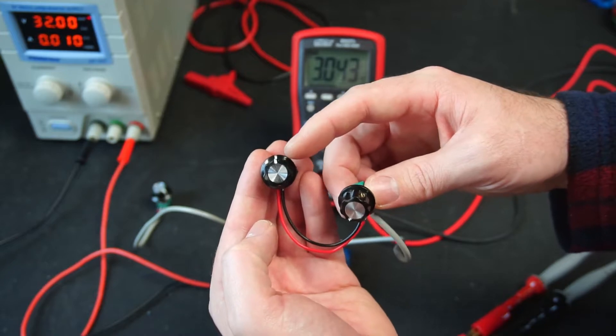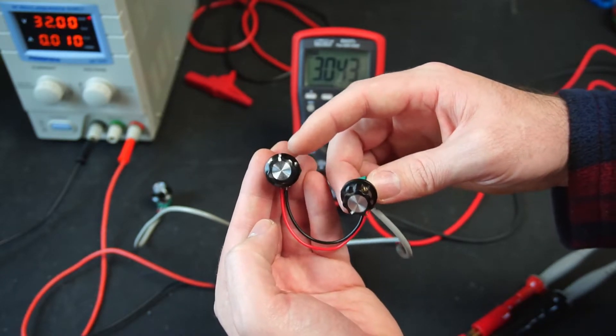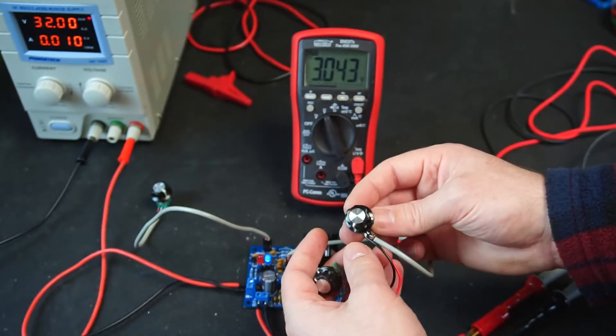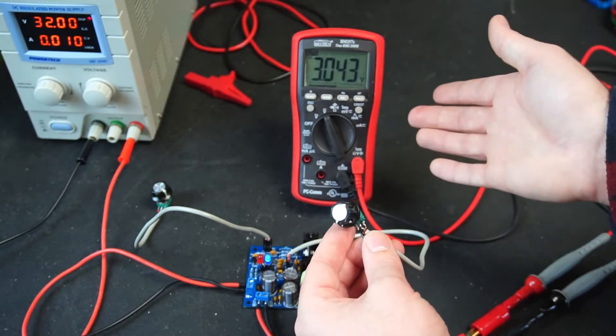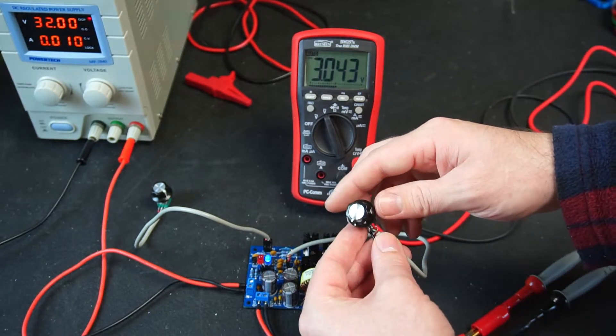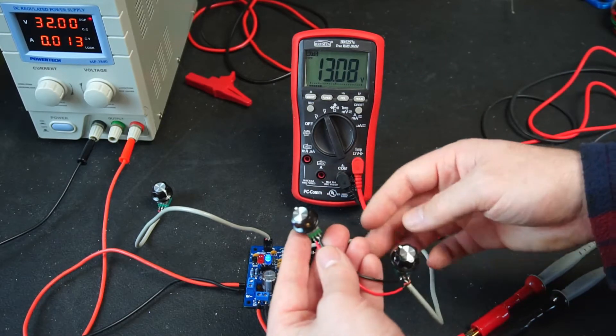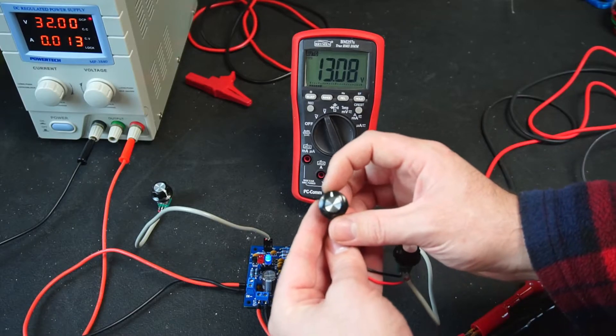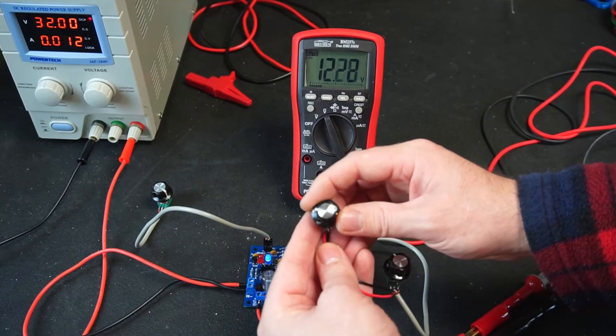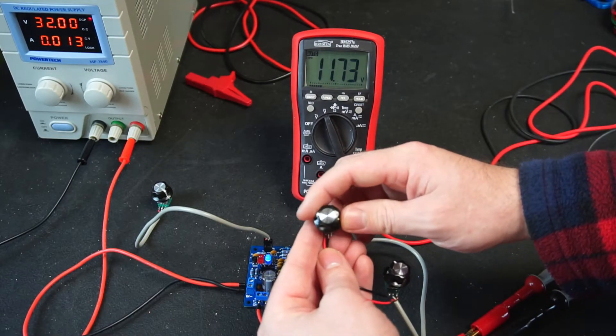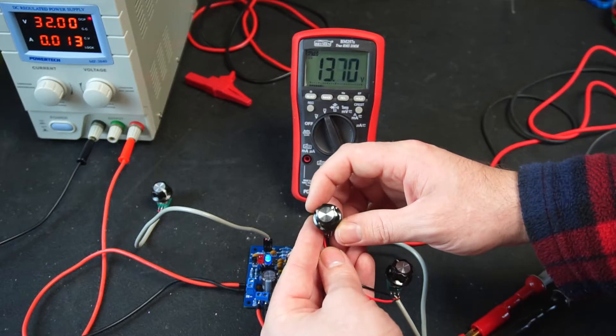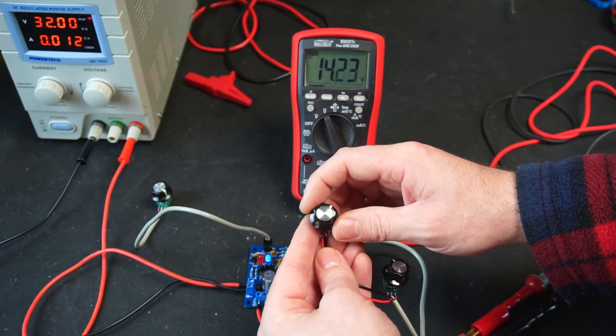And the idea is you would have the fine adjust set in the middle position to begin with. So let's say once again I want an output of 12 volts. So I'd first adjust the coarse until I'm in the right ballpark and then I'd come over to the fine adjust and then I can either move it up or down and it's just going to adjust the output gradually rather than being super sensitive.